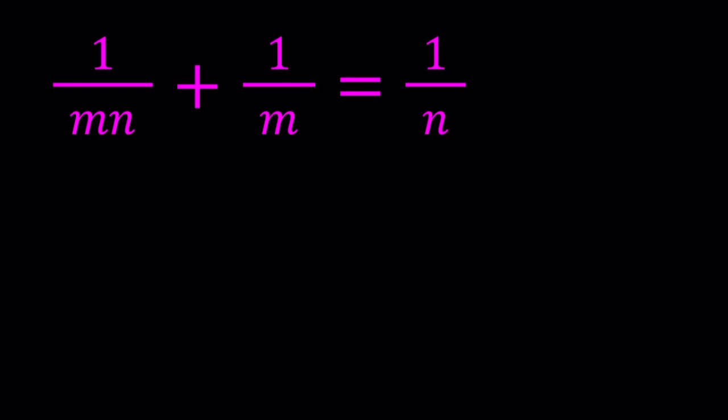m and n are primes, and we have this equation: 1 over mn plus 1 over m equals 1 over n. So we're going to be solving for m and n values.